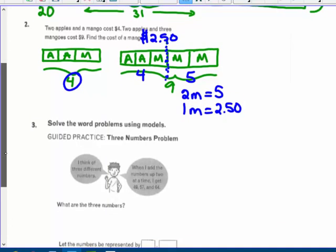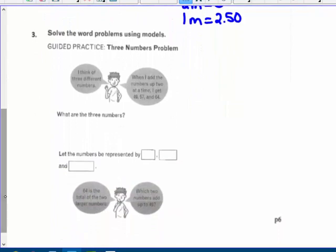Notice I'm not labeling this just because this is taking a while. We'll talk about that. And again, you may not be able to read in your packet what he's thinking of here. It says, oh, I think of three different numbers. So you may have to write this in here. When I add, so you might have to write on your paper, when I add the numbers up two at a time, I get 49, 57, and 64. When you add them two at a time, add two, two at a time. Sorry, this did not print. 49, 57, and 64.